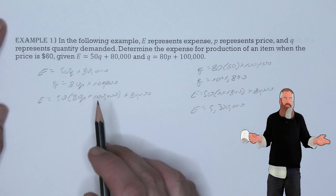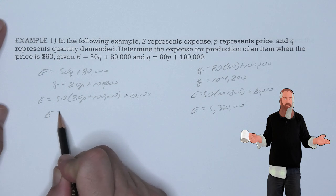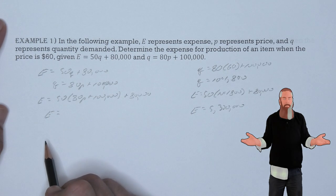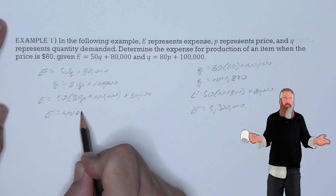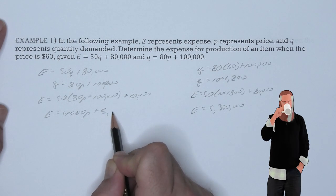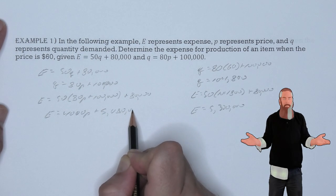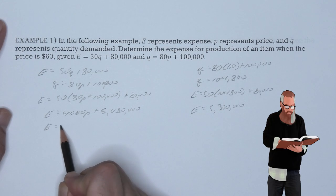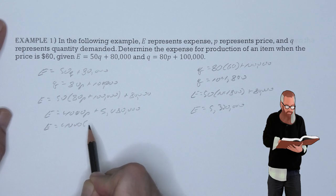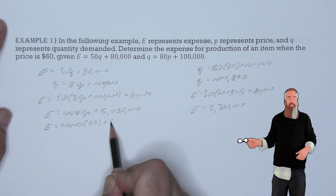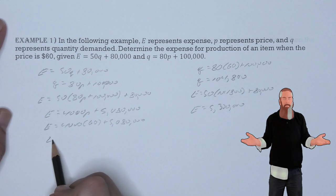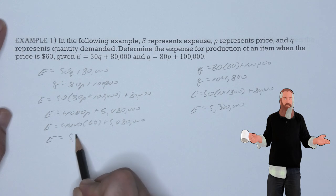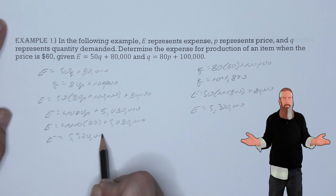This allows us to distribute and combine like terms, giving us E is 4,000P plus 5,080,000. Now, we would substitute 60 in for P, giving us E is 4,000 times 60 plus 5,080,000. Or that E is 5,320,000.